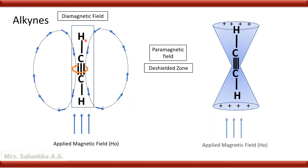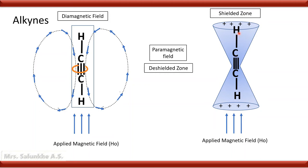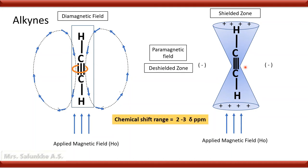In the cup and cone arrangement, it is clearly seen that the proton on the carbon triple bond carbon is present in the shielded zone, while there is a paramagnetic field or deshielded zone around the molecule. Therefore, in case of alkynes, the chemical shift range is 2 to 3 delta ppm. In case of terminal alkynes, their chemical shift values are 2 to 3 delta ppm. The protons are present in the shielded zone, and therefore their chemical shift values are less.